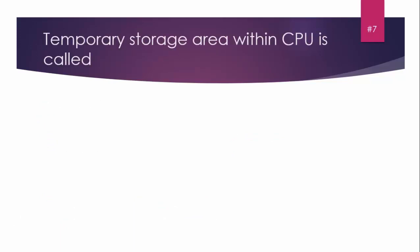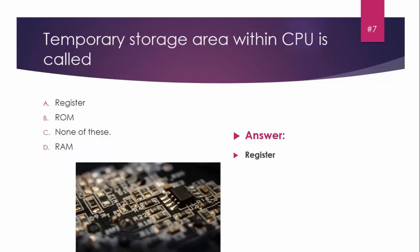MCQ number seven: Temporary storage area within CPU is called blank. Options: A) Register, B) ROM, C) None of these, D) RAM. The answer is Register, because register is a small size memory inside the CPU. Look at the diagram showing the CPU close-up view, where you can see small portions of memory - these are the registers.